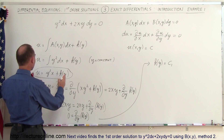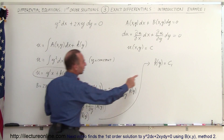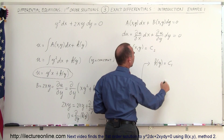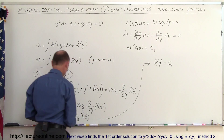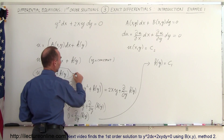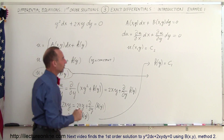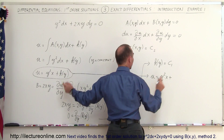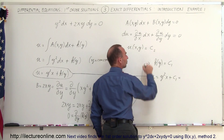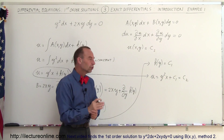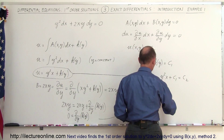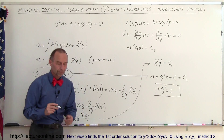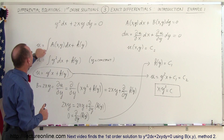Now we go back and say that u equals xy squared plus k(y), and since k(y) is a constant C₁, and u itself must equal a constant C₂ for an exact differential, we can combine the two constants into a single constant C. Therefore the solution to the differential equation is simply x y squared equals C.